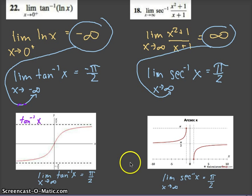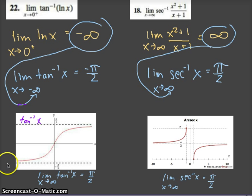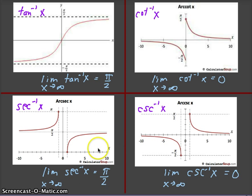Here are the last two examples — pause and look at these carefully. When working with inverse tan or inverse secant, you've got to know what these graphs look like. As x goes to infinity, inverse tan approaches π/2; as x goes to negative infinity, it approaches negative π/2. Similarly for inverse secant. Commit these graphs to memory so you can work with limits involving inverse tan, cotangent, secant, and cosecant. Thanks for watching.